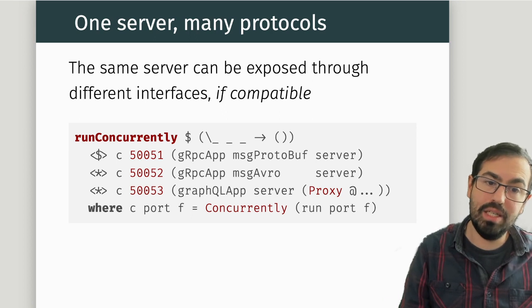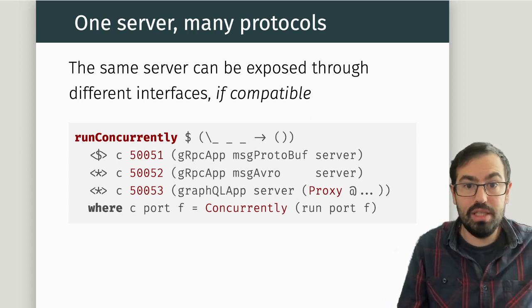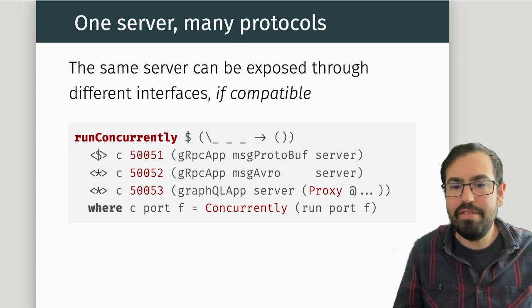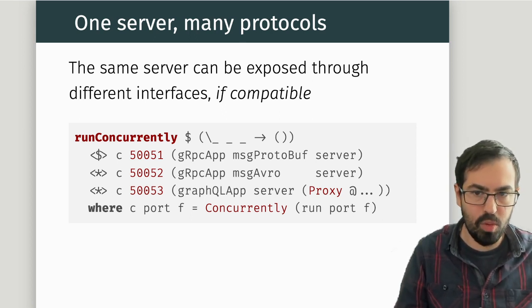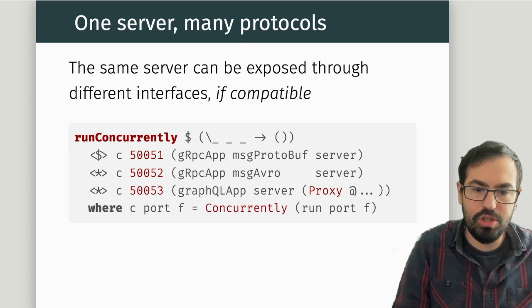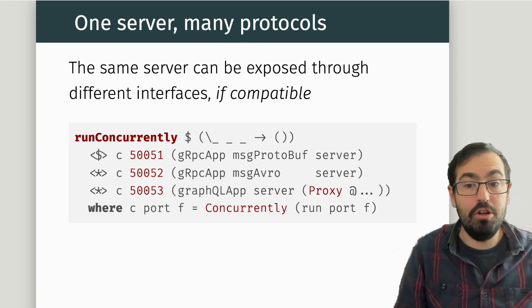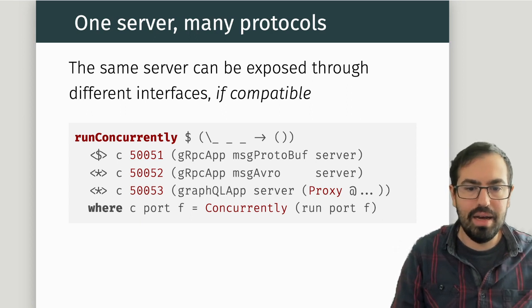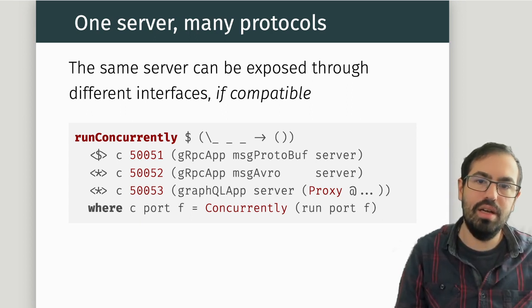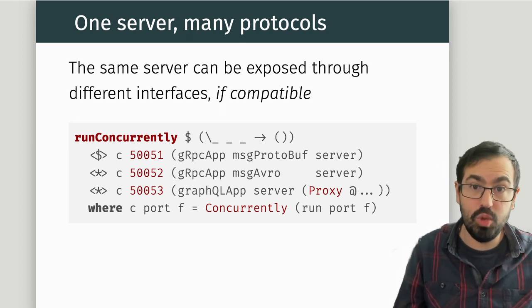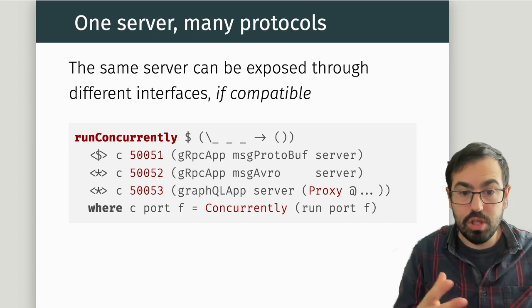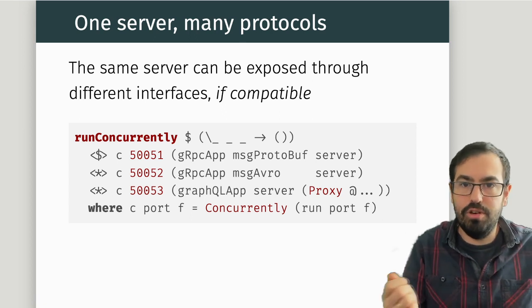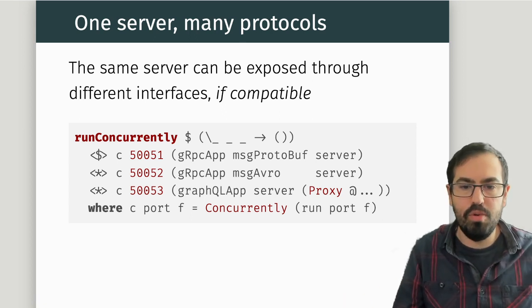The nice thing about Mu is that once you define one server, you can expose it using many protocols. The same service definition can be exposed to different interfaces if the protocol is compatible. For example, if you want to expose using GraphQL, maybe you cannot use one kind of streaming because it only supports output streams. But if everything is supported, you can actually run the same server concurrently exposing it in three different protocols on three different ports.